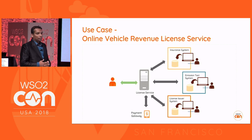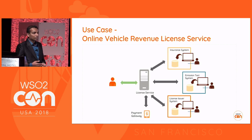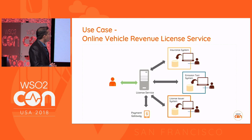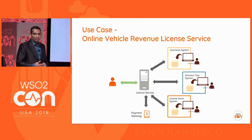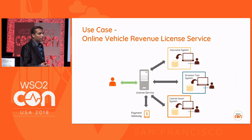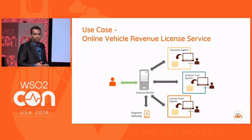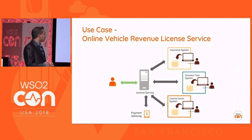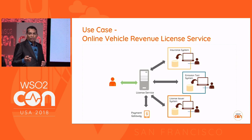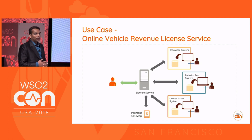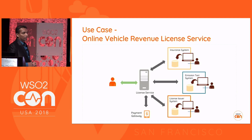There are already systems available but those systems are not integrated. If somebody wants to take a revenue license, first they need to go to the insurance issuing party and take insurance, then go to the emission test party and take an emission test certificate, and then having those two, they need to go to the license issuing authority and spend half a day there. What we are going to do is a digital transformation — introduce a new system where people can easily obtain their revenue license online, integrating with a payment gateway to make the payment.